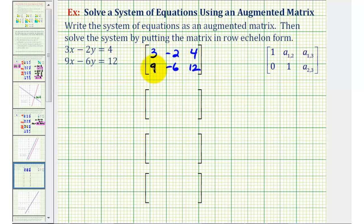Notice how the first column contains the coefficients of x, the second column contains the coefficients of y, and the third column contains the constants when our equations are in standard form. Now to solve this, we want to write the matrix in row echelon form.